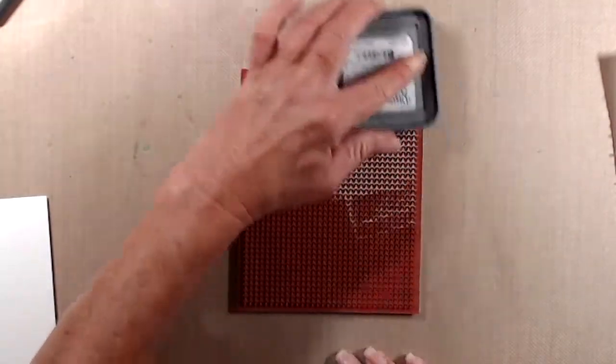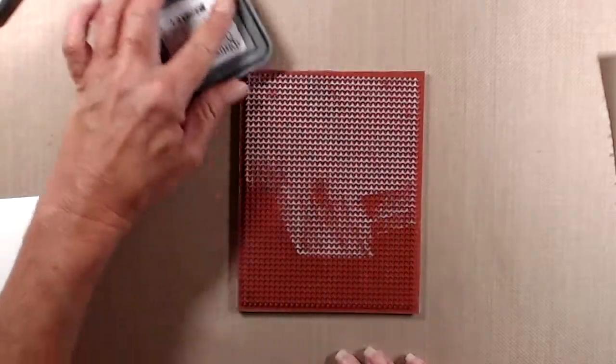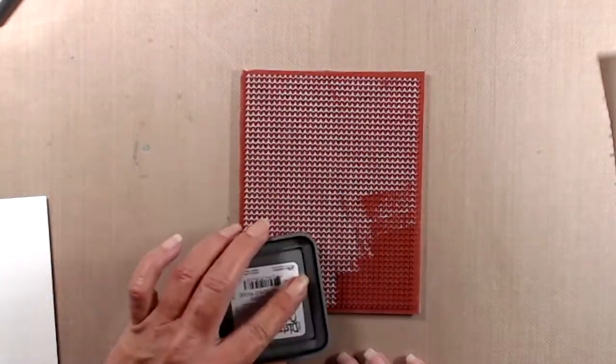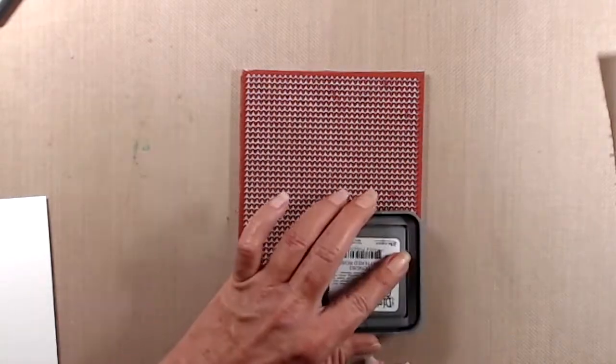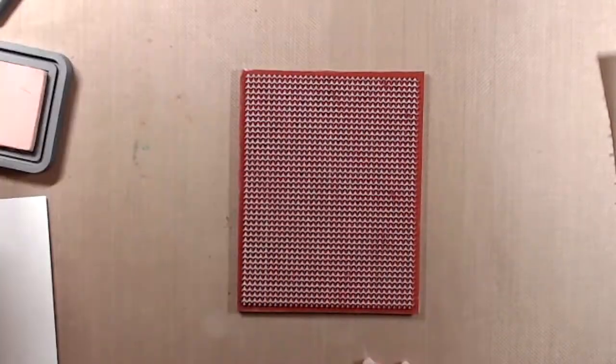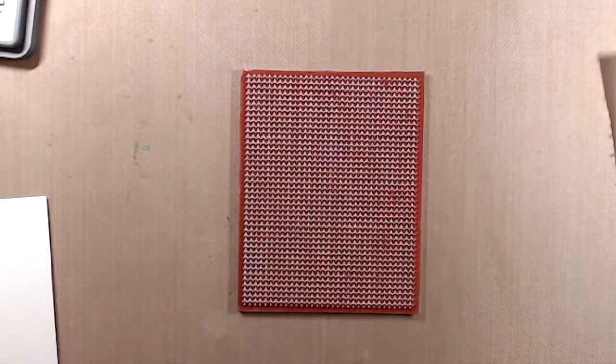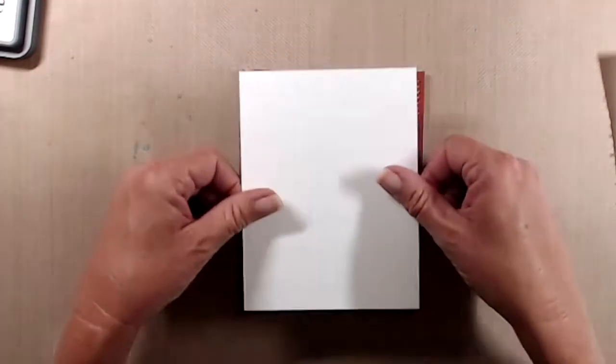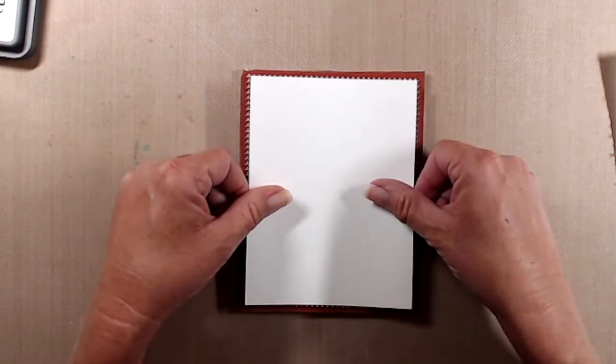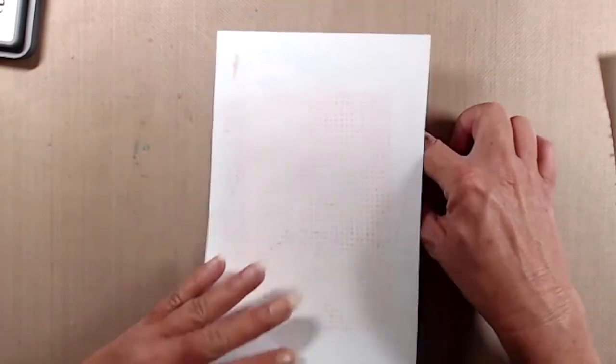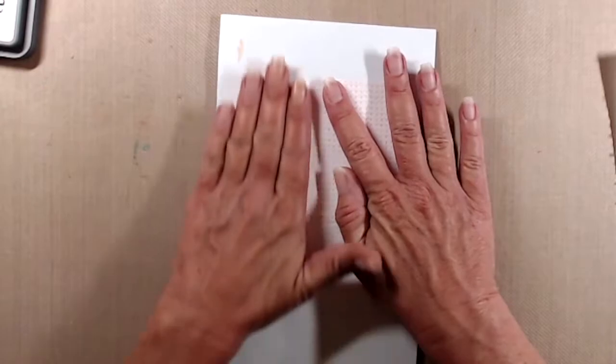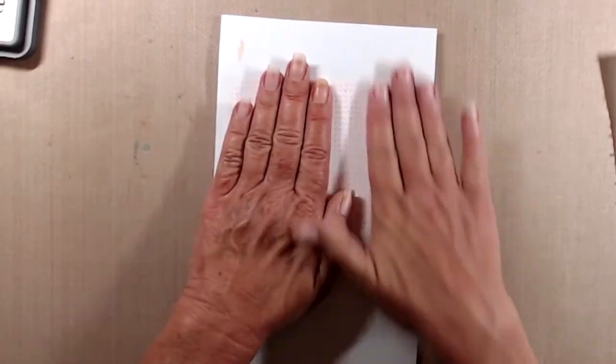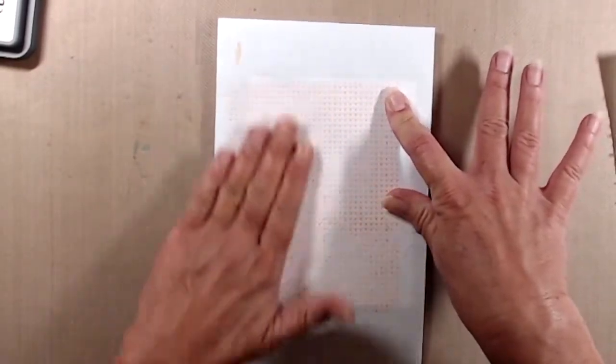To get started I placed the cross stitch hearts background stamp onto my craft mat and inked it up with tattered rose distress oxide ink. I then flipped over my cardstock on top of the stamp and used a piece of scratch paper to rub over that to get a really good transfer of the ink. The cardstock is 110 pound Neenah Classic Crest cardstock cut to four and a quarter by five and a half.